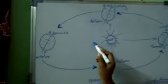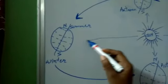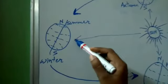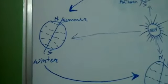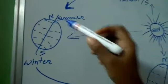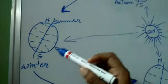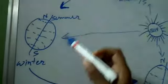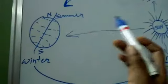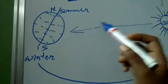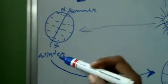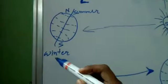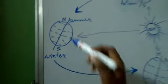Now the same condition occurs again — when our Earth comes to this side, it is too far from the sun. But this time the northern side is at the front of the sun. So summer is here in the northern part and winter is here in the southern part.